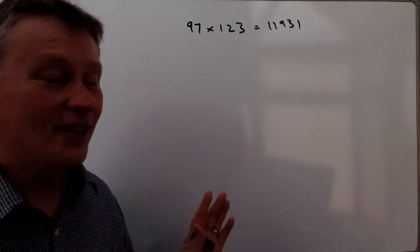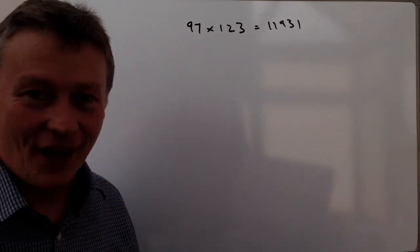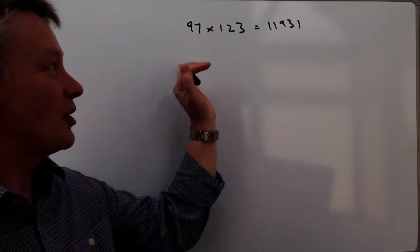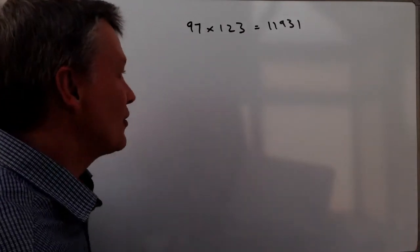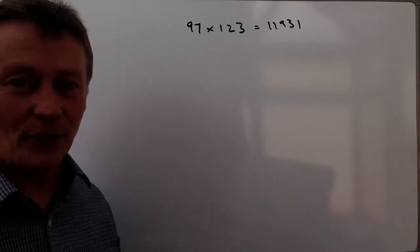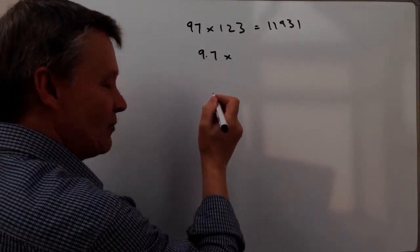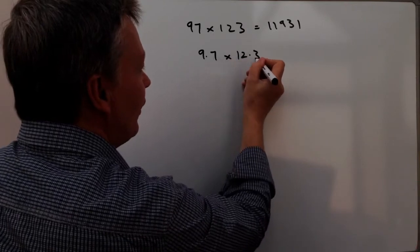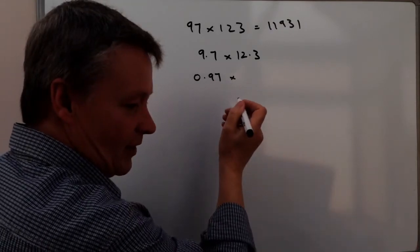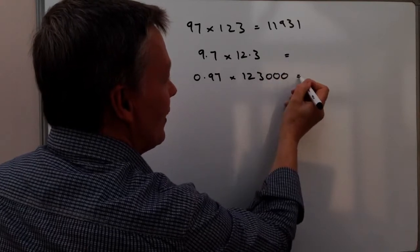I'm sure it does, and if you really wanted to do some long multiplication or use a calculator, I'm sure that you could check that for yourself. The main gist of the question is actually to use this information and then also to answer some other questions which usually involve moving the decimal point. So what we've got is something like 9.7 times 12.3 and also 0.97 times 123,000, and they want to know the answers to those.